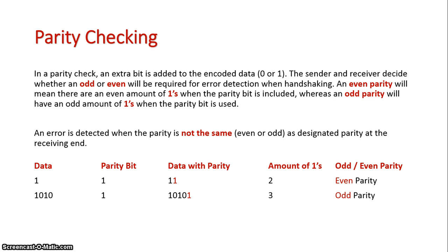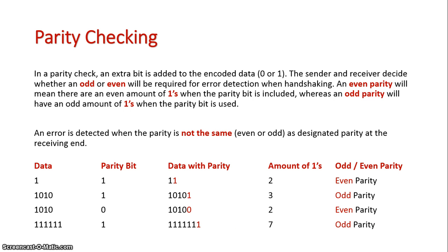If I send the number 1, 0, 1, 0 and add a 1 as the parity bit, there are three 1s and it is an odd parity. If instead I sent a 0 as my parity bit, it would maintain an even parity. And if I had six 1s and add a seventh, it gives you an odd parity.